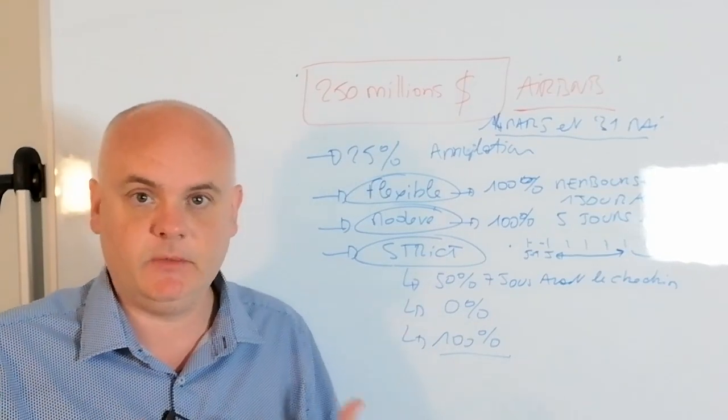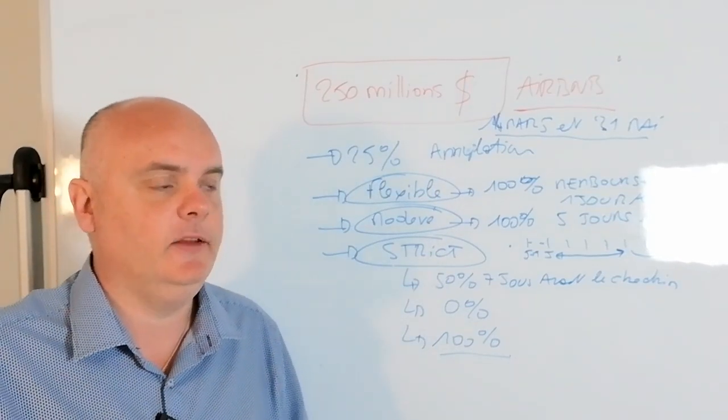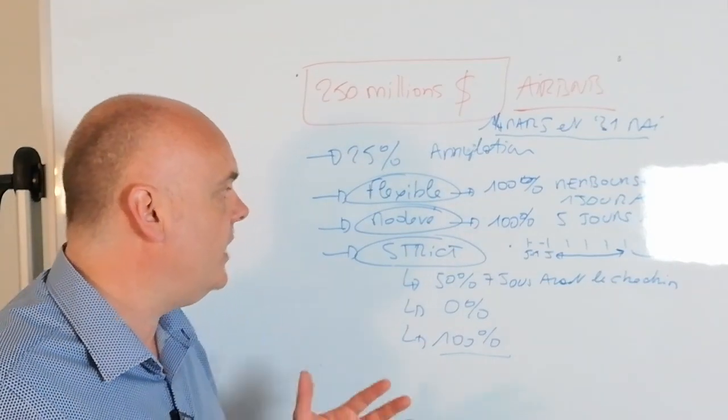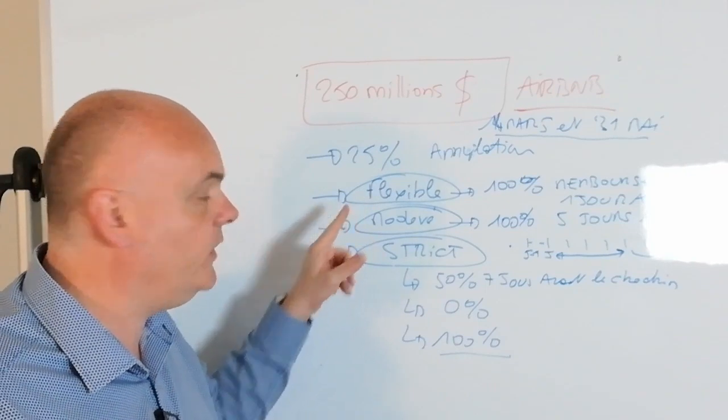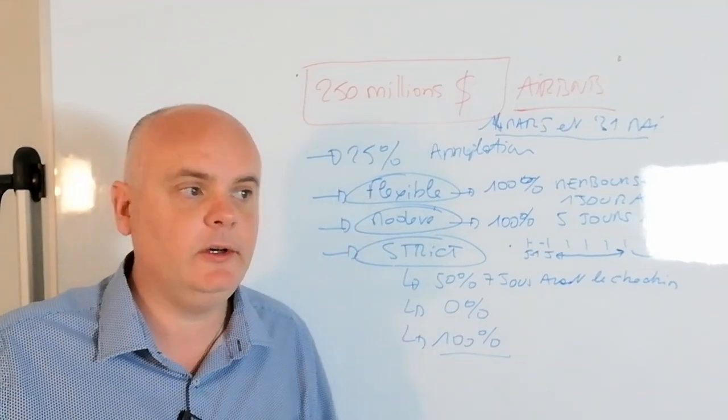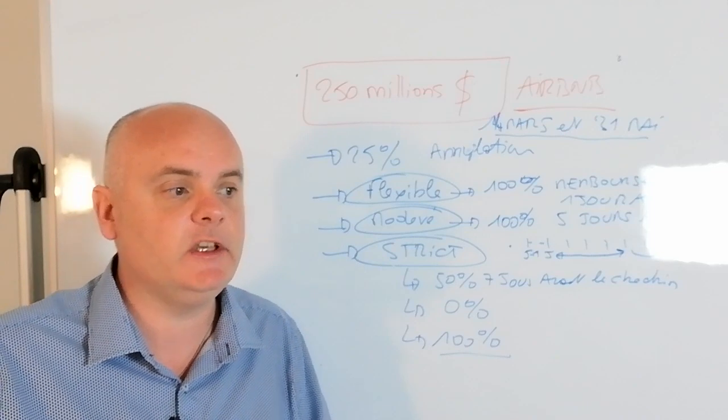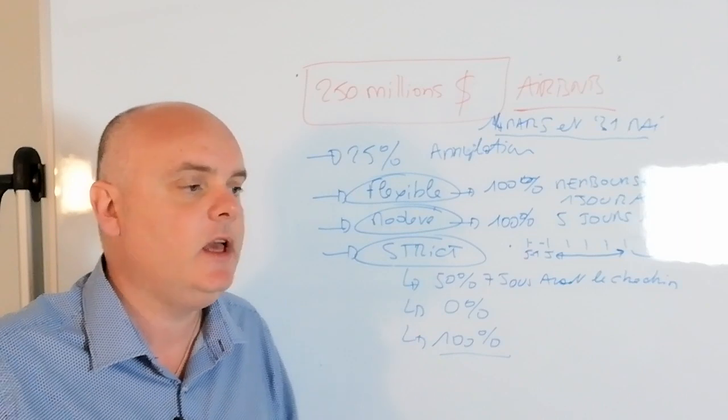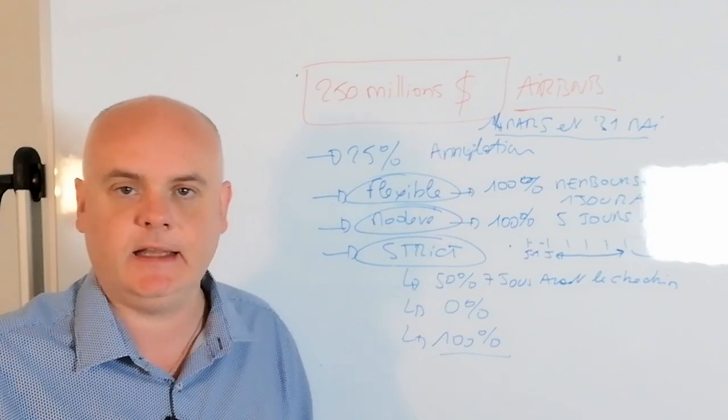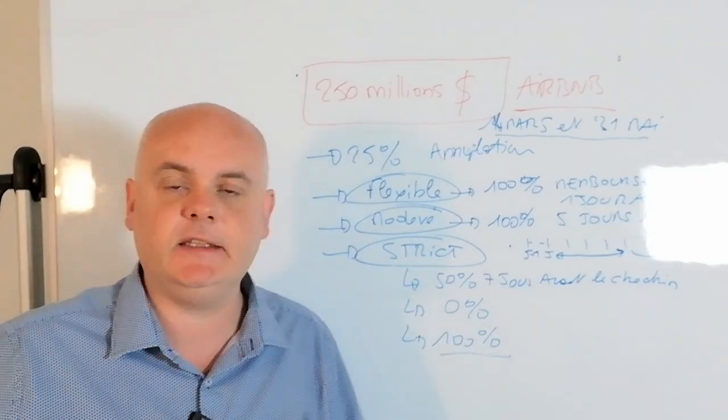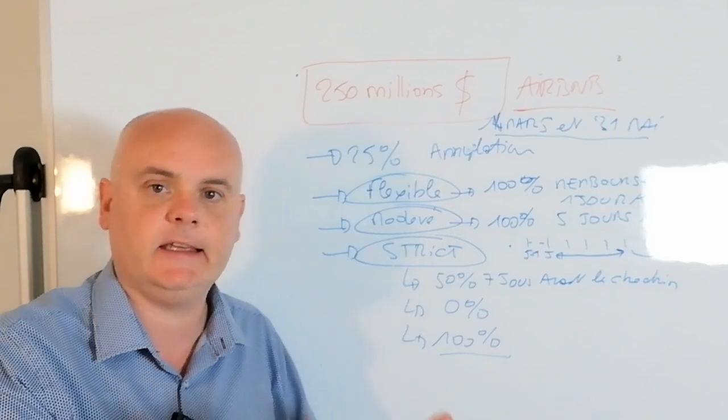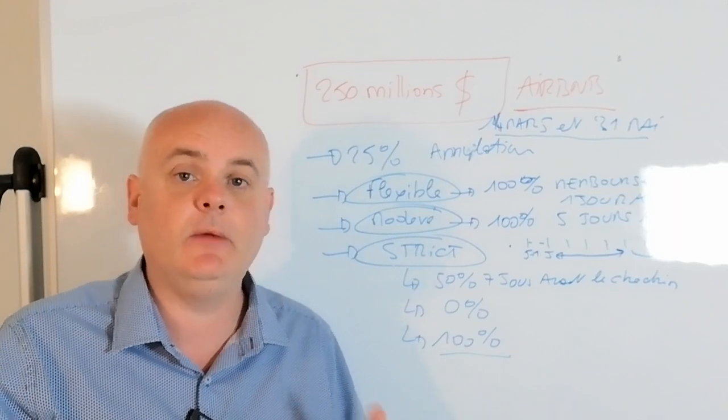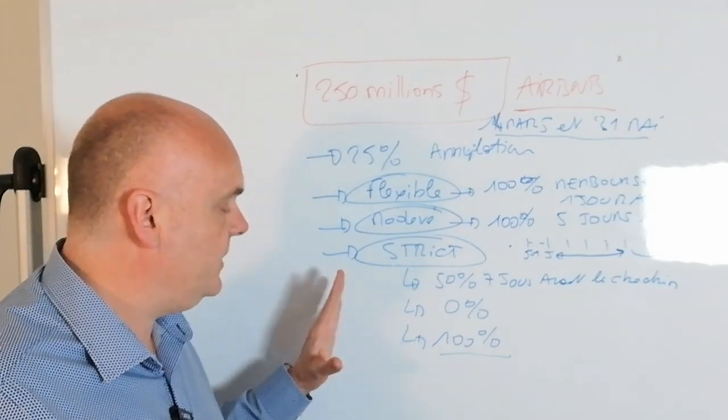And finally it's strict mode. So there, strict mode, it's those who were in this mode who are going to receive the most because there it was really 50% seven days before check-in. So there, there are many people who are going to be concerned by this. And if it was well before the 7 days, well there it's 100% of the reservation. 100%. So that means there you receive 25% of the 100% that should have come back to you. So it's especially these people. And I think Airbnb must have looked a bit at what was going to happen. I think that's also how they evaluated their 250 million dollars. And I think there are many people who were in flexible mode.